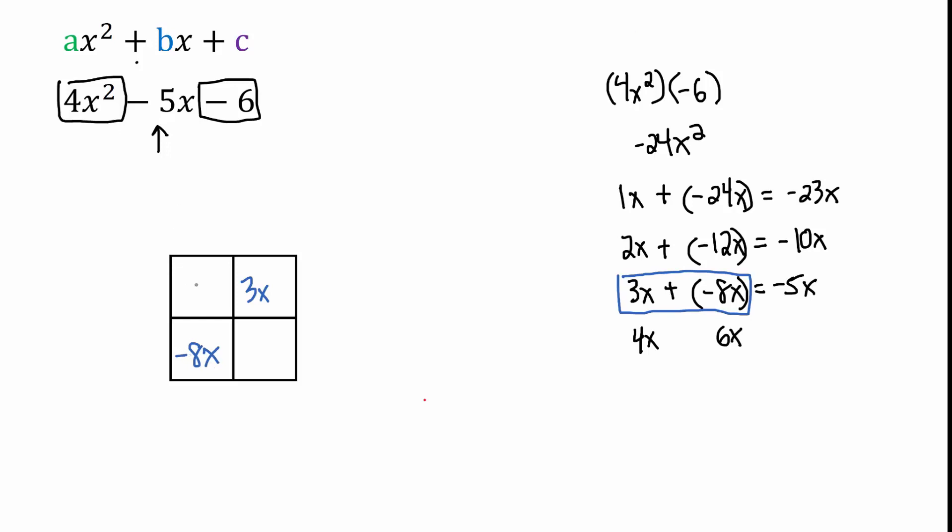The numbers that go in the top left and the bottom right are going to be the ax squared term. So 4x squared goes here. Every time this box right here gets this leading term. And then the bottom right box gets our negative 6. It's always our constant. That always goes in the bottom right box. This box and this box always get these two terms, and it doesn't matter which box you fill it in. If you want to put the minus 8x up here and the 3x down here, that's okay too.